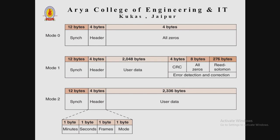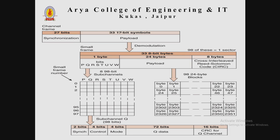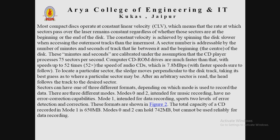Most compact discs operate at constant linear velocity (CLV), which means the rate at which the disc sectors pass over the laser remains constant regardless of whether those sectors are at the beginning or end of the disk. Constant velocity is achieved by spinning the disk slower while accessing the outermost tracks than the innermost. A sector number is addressable by the number of minutes and seconds of track that lie between it and the beginning of the disk, calibrated under the assumption that the CD player processes 75 sectors per second.